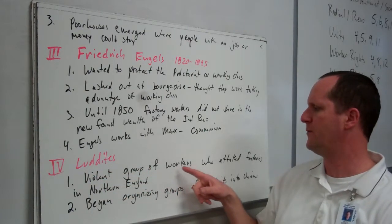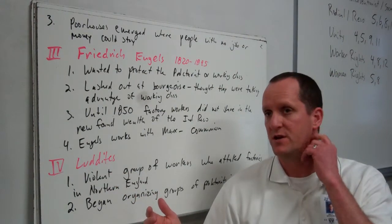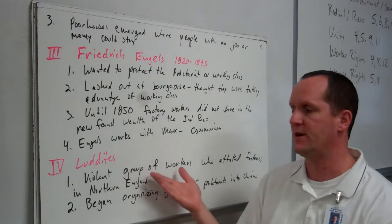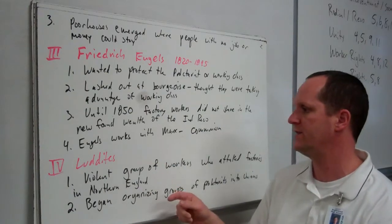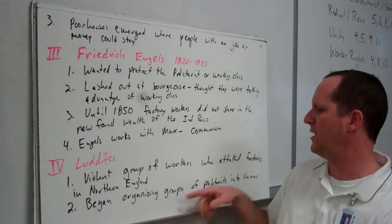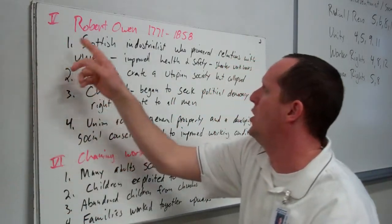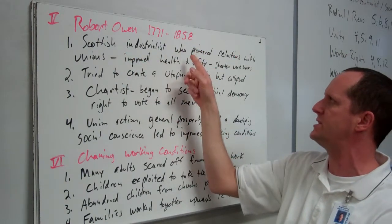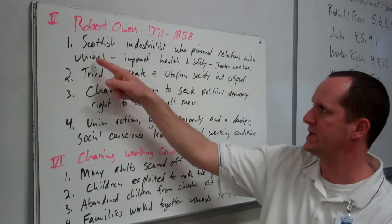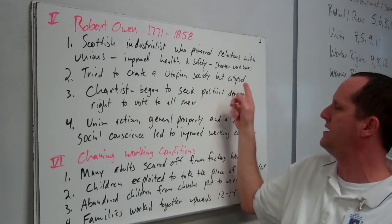The Luddites were a violent group of workers who attacked factories in northern England. They were an extreme faction of union workers who represented those who felt they should rise up against the factories and their owners. Groups of proletariats began organizing into unions. Robert Owen (1771–1858) was a Scottish industrialist who pioneered relations between big industrialists and the unions. He improved health and safety, pushed for shorter work hours, and tried to create a utopian society, but it collapsed.